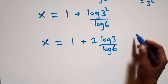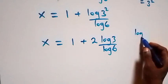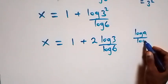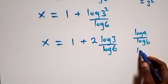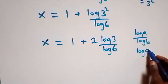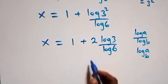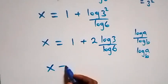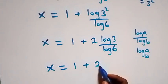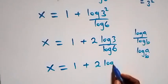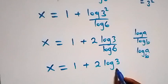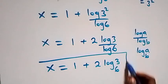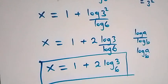From the change of base formula, log A over log B is the same as log A to base B. We can rewrite this and have x equals to 1 plus 2 log 3 to base 6. So the value of x in this problem is 1 plus 2 log 3 to base 6.